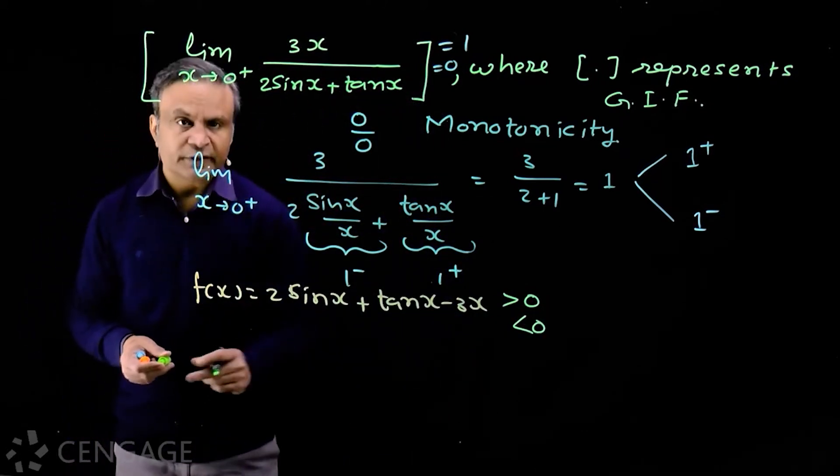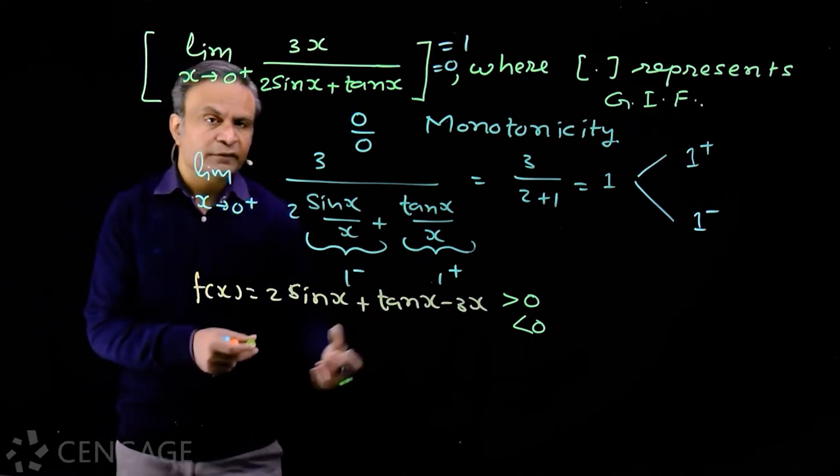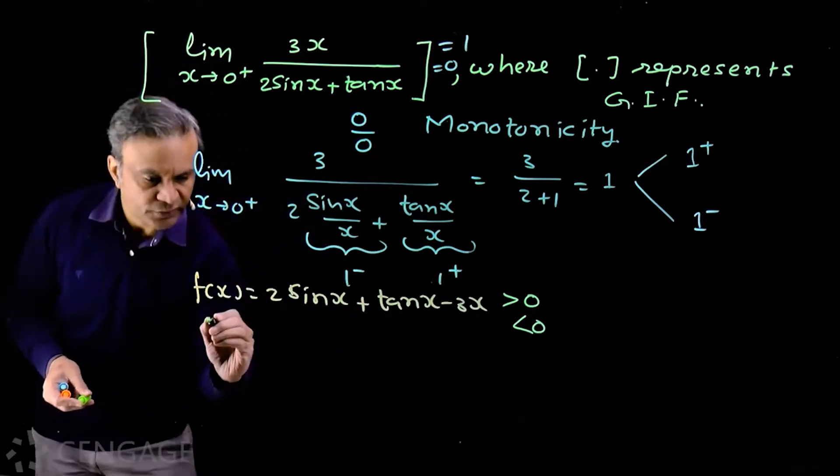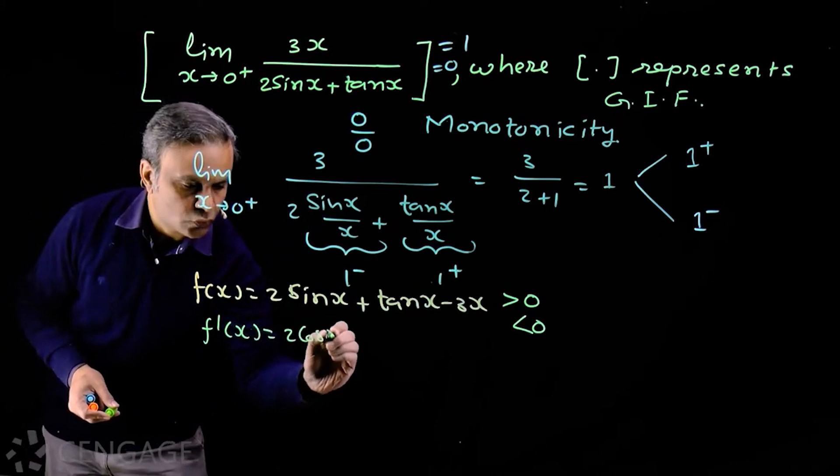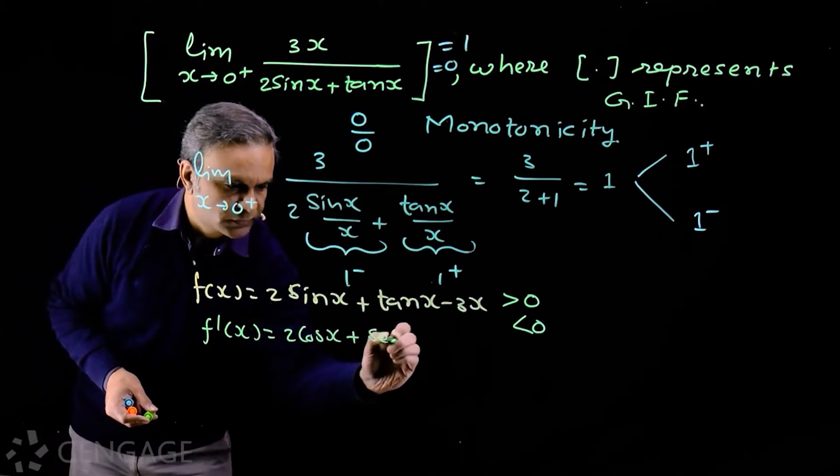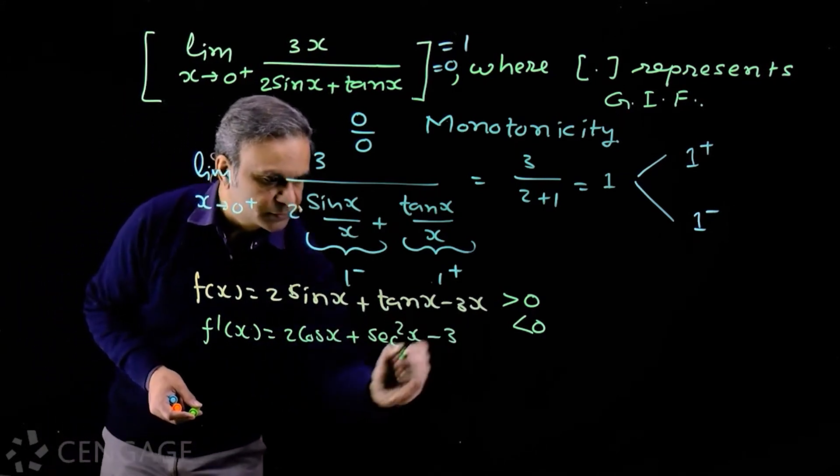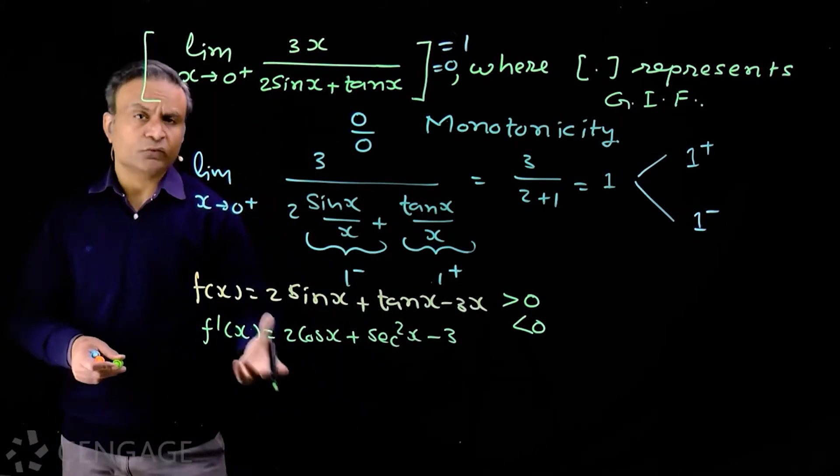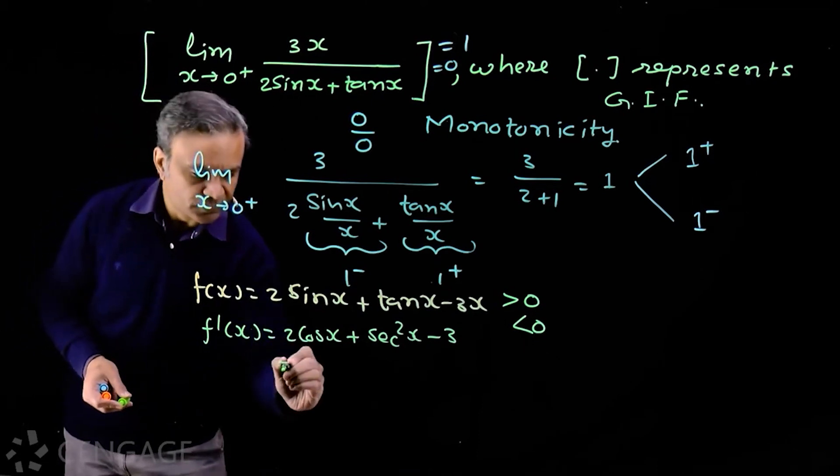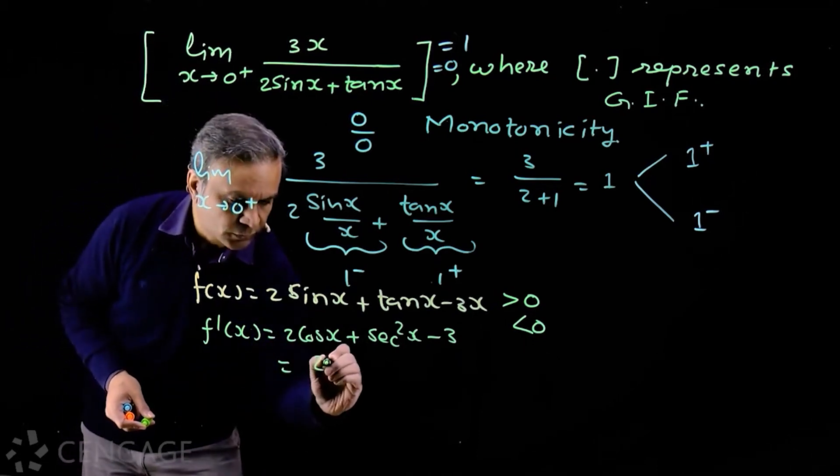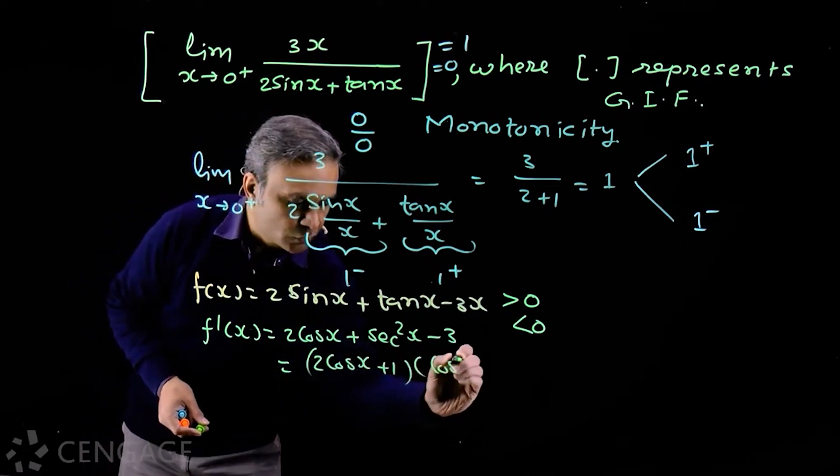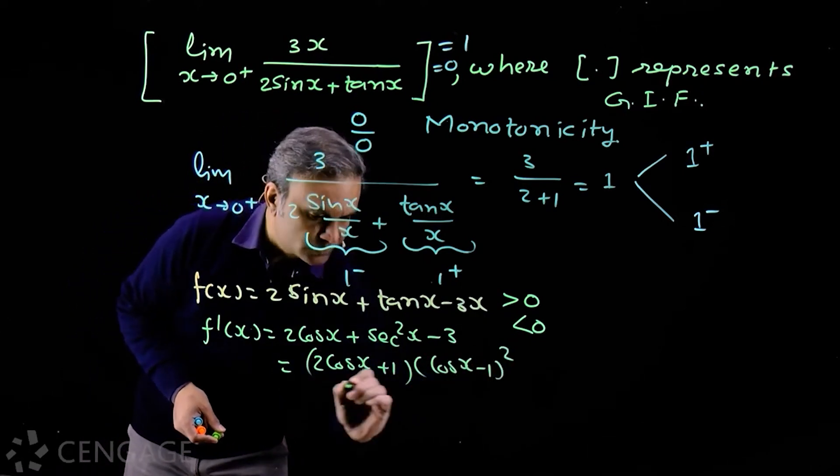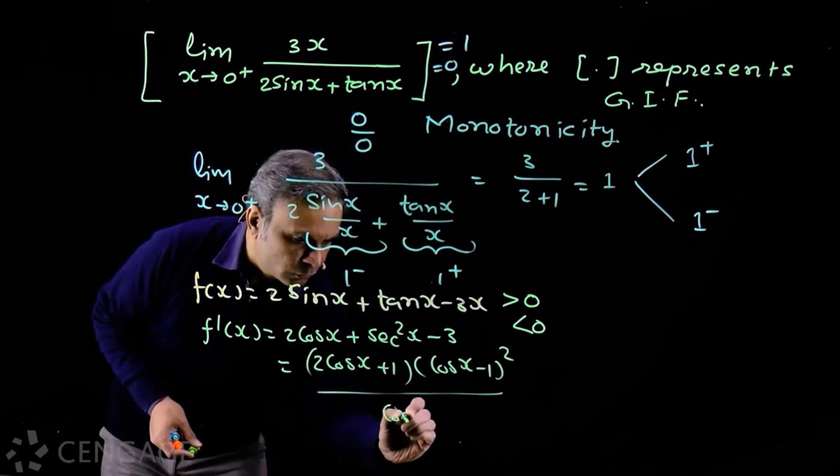For that, we analyze the function using differentiation. Differentiate this function, we have f'(x) = 2 cos x + sec²x - 3. Sec²x is 1 upon cos²x. We can simplify to 2 cos x + (1/cos²x - 3) = (2 cos x + 1)(cos x - 1)² upon cos²x.